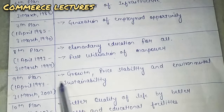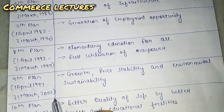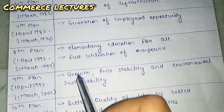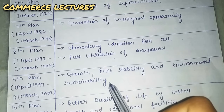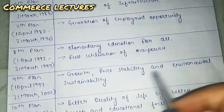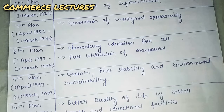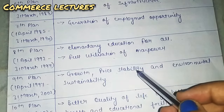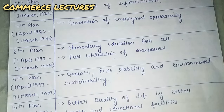The ninth plan ran from 1st April 1997 to 31st March 2002. Its aims were growth, price stability, and environmental sustainability. Sustainability means using resources in such a way that future generations are not adversely affected — we should not use all resources now and leave problems for future generations.